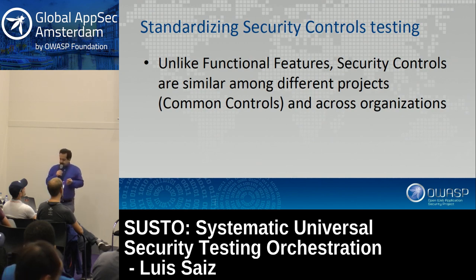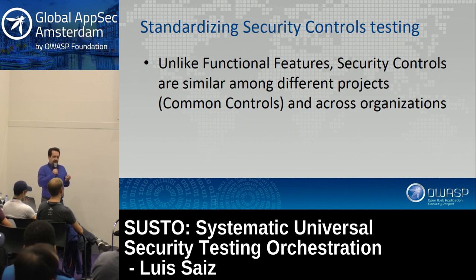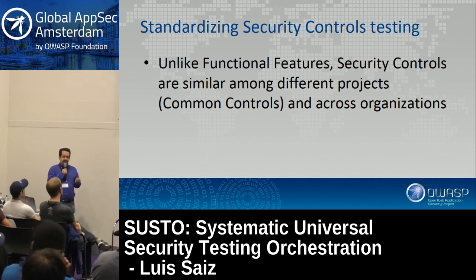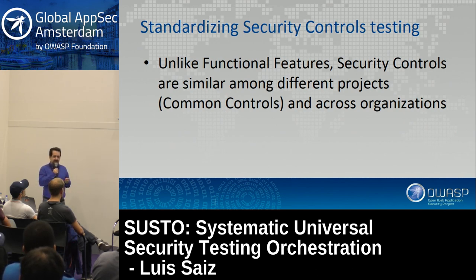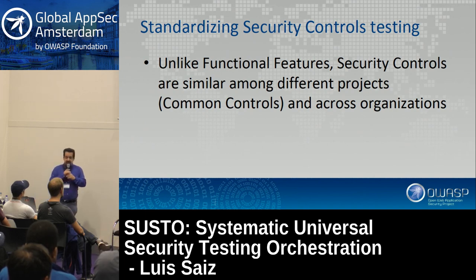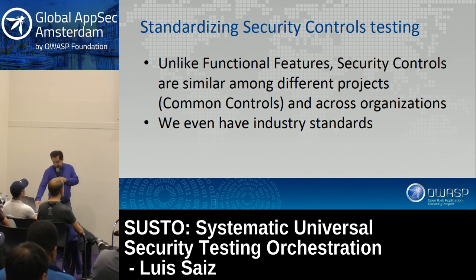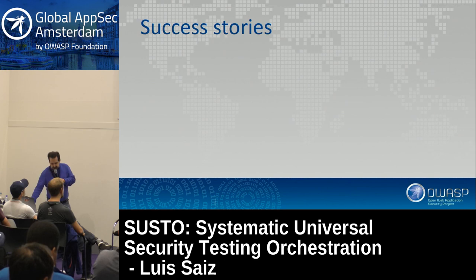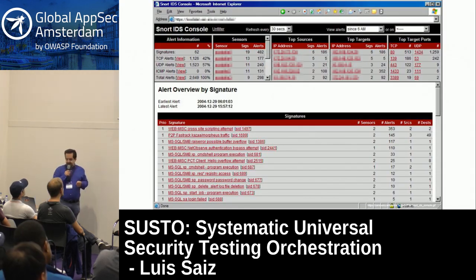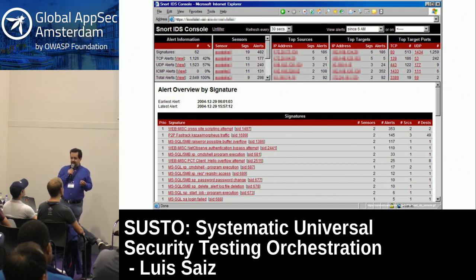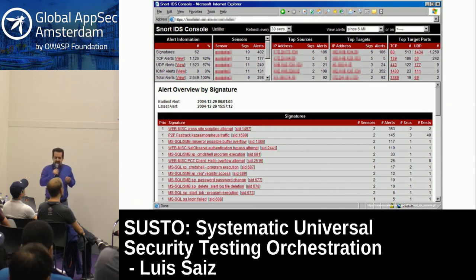But good news: standardized security controls are easier than feature controls. Security controls are very similar from project to project and from company to company. We need to talk about common controls. We even have industry standards. This can be done. Like the well-known Snort IDS — you have rules, a tool, and rules maintained by the community and by some companies.